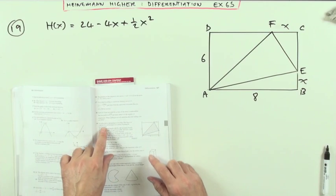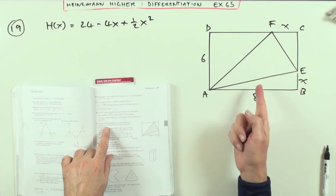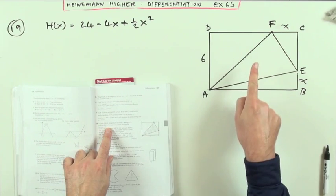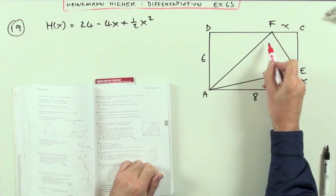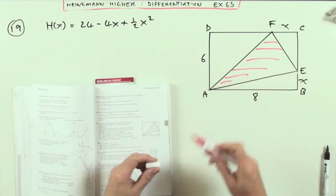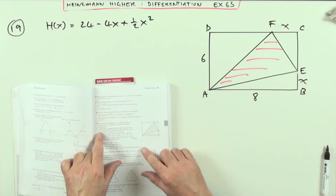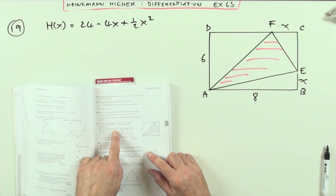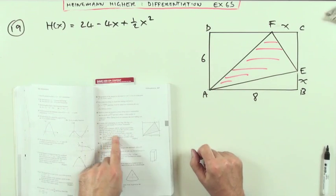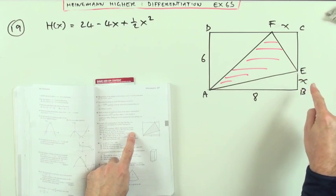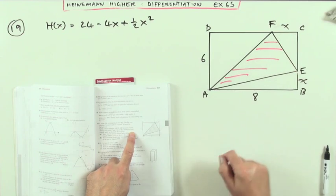So let's read this out. A yacht club is designing its new flag, there it is, to consist of a red triangle on a yellow background. In the yellow rectangle, AB is 8 and ED is 6, and E and F are X units from the corners as shown.